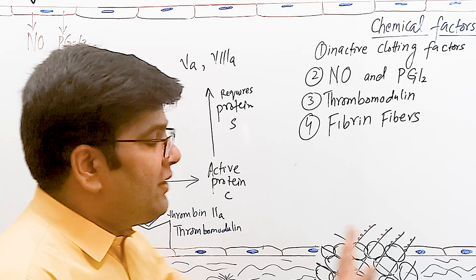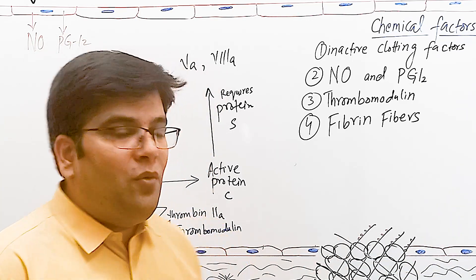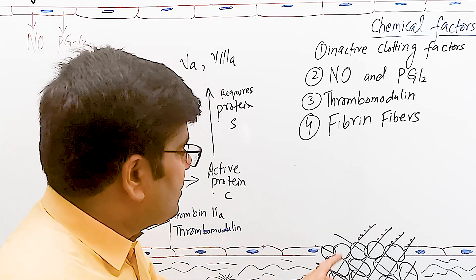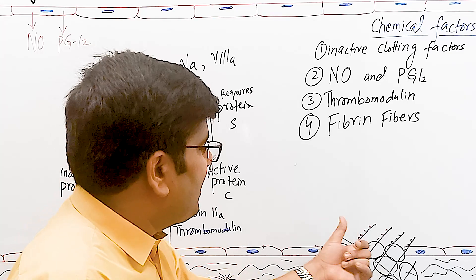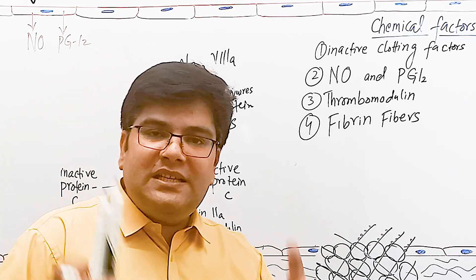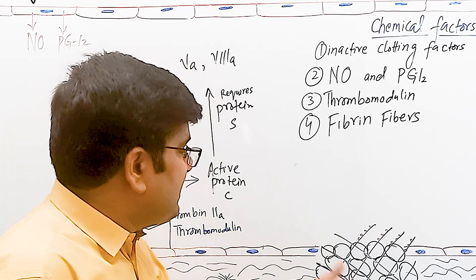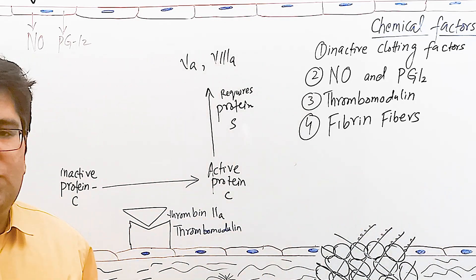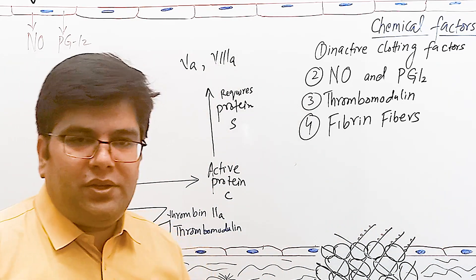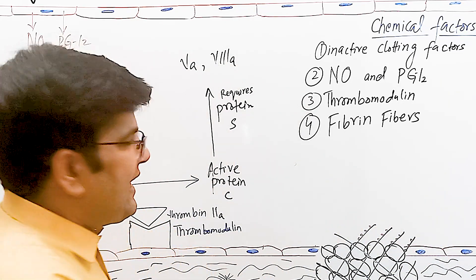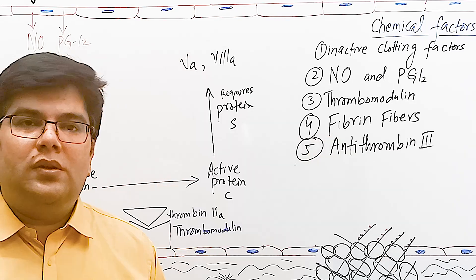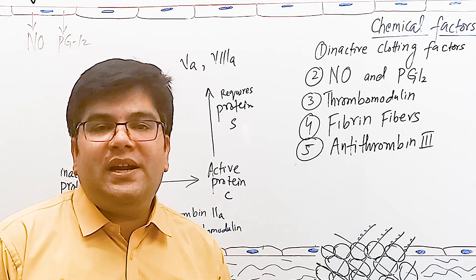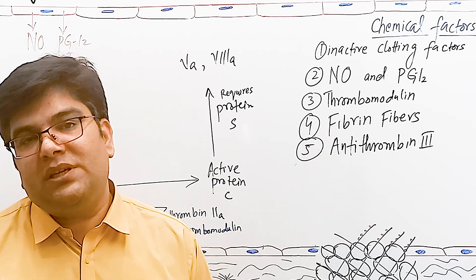By removing more than 80 percent of thrombin — which is a very important positive feedback mechanism for increasing blood clotting — fibrin fibers prevent the spread of thrombin to nearby normal tissues. The clot forms only at the area where injury has taken place, and because thrombin does not spread to normal tissues, it prevents excessive clot formation in nearby normal tissue.